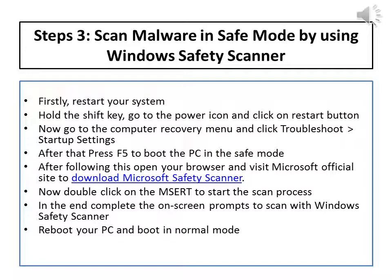Step 3: Scan Malware in Safe Mode using Windows Safety Scanner. Firstly, restart your system — hold the Shift key, go to the power icon and click Restart. Now go to the Computer Recovery menu, click Troubleshoot, then Startup Settings. Press F5 to boot the PC into Safe Mode.